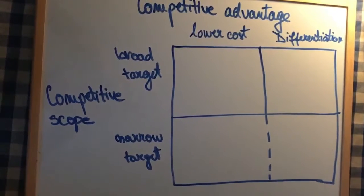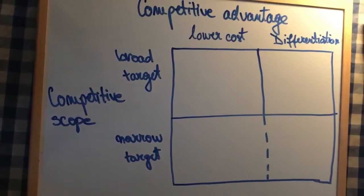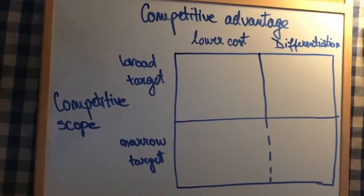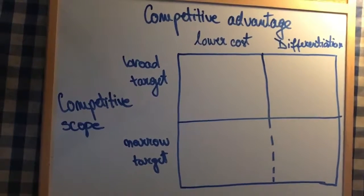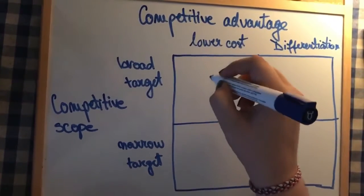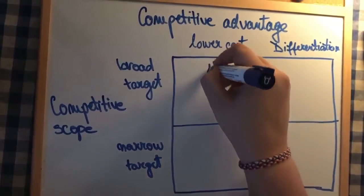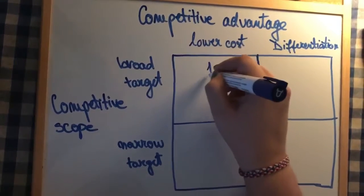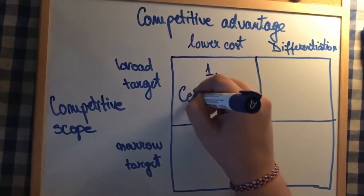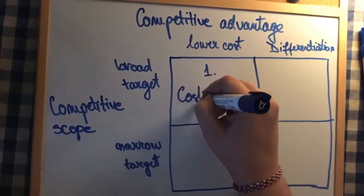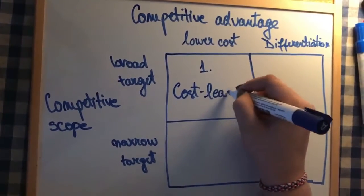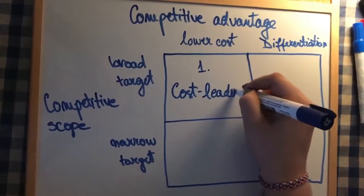Now we're coming to the four different generic strategies. The first one is the cost leadership strategy. This strategy involves becoming the lowest cost organization in a domain or activity, and therefore they are using four key drivers.